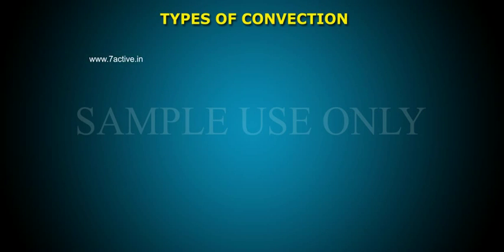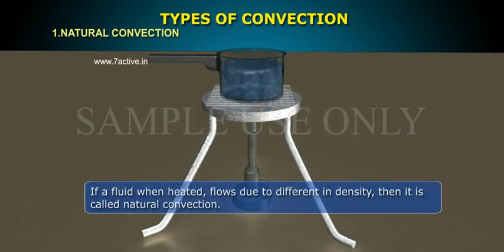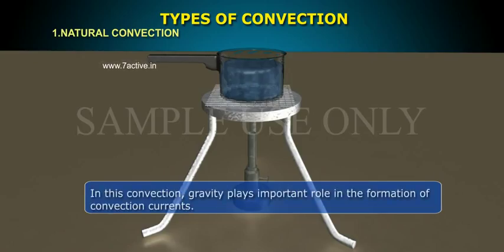Types of convection: 1. Natural convection. If a fluid, when heated, flows due to difference in density, then it is called natural convection. In this convection, gravity plays an important role in the formation of convection currents.